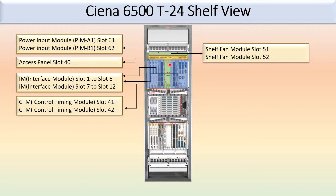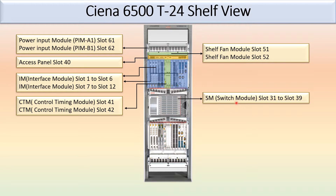The two slots in between — slot 41 and slot 42 — are fixed for the CTM, control and timing module. The switching module, or switch module, occupies slot 31 to slot 39 — these are all fixed for the switching module.